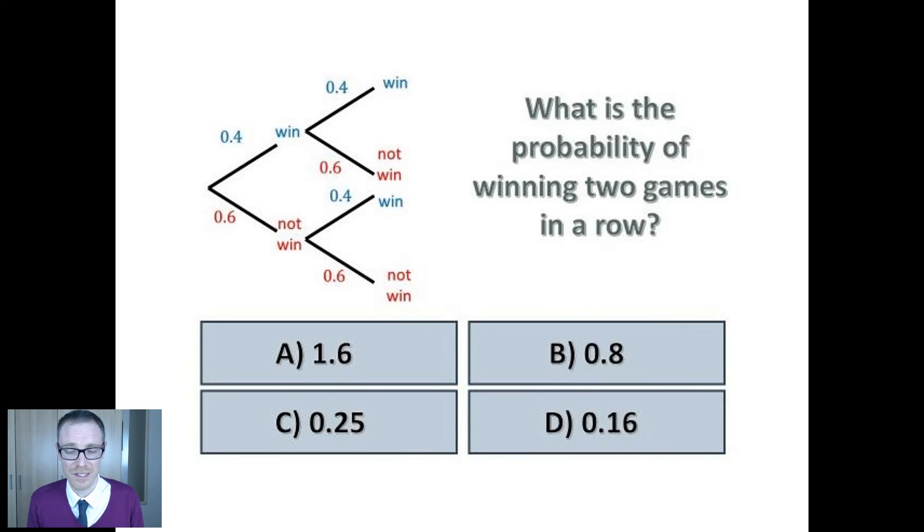So take A, 1.6. Now for me that child understands the concepts of probability and even tree diagrams. They know that to get the answer they've got to multiply the two branches with 0.4 together. However their misconception lies when it comes to multiplying decimals. They've got place value issues not probability issues.